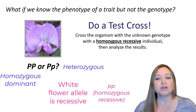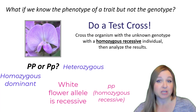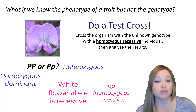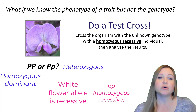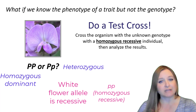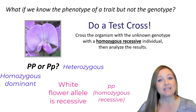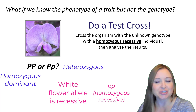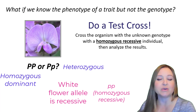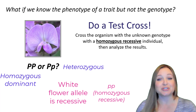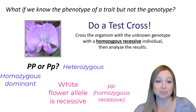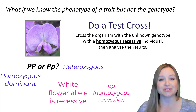So we are going to cross this purple pea plant — we don't know if it's big P, big P or big P, little p — with a white flowering pea plant, because the white flowering plant is homozygous recessive. Based upon the F1 results, we'll be able to determine the genotype of the parent plant with purple flowers.